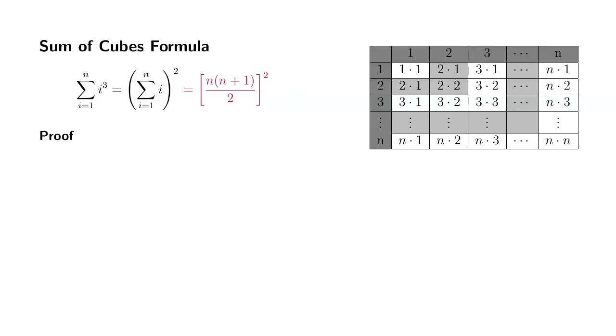I'm going to write down the right-hand side first. The right-hand side is the summation of i, which is 1 plus 2 plus 3 all the way to n. Since it's squared, I multiply by itself.